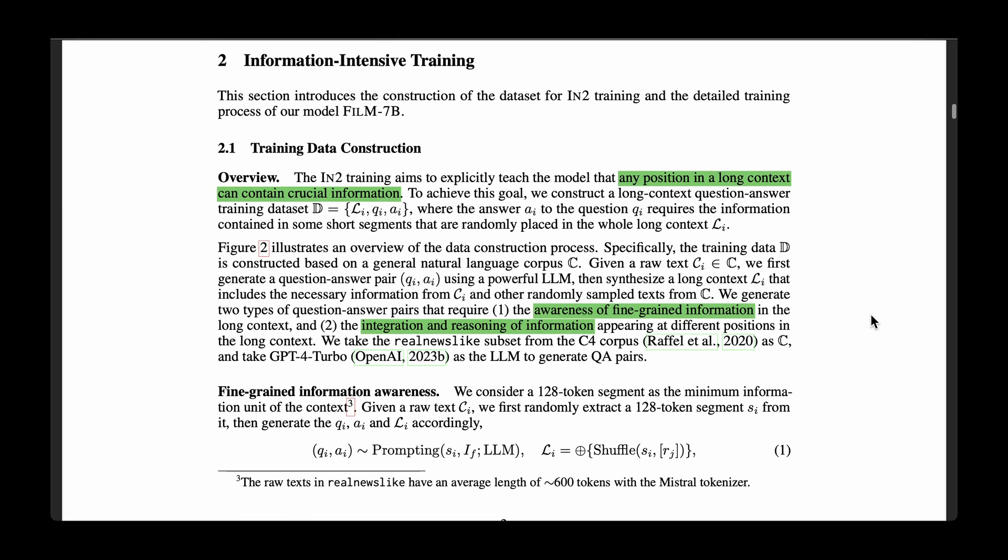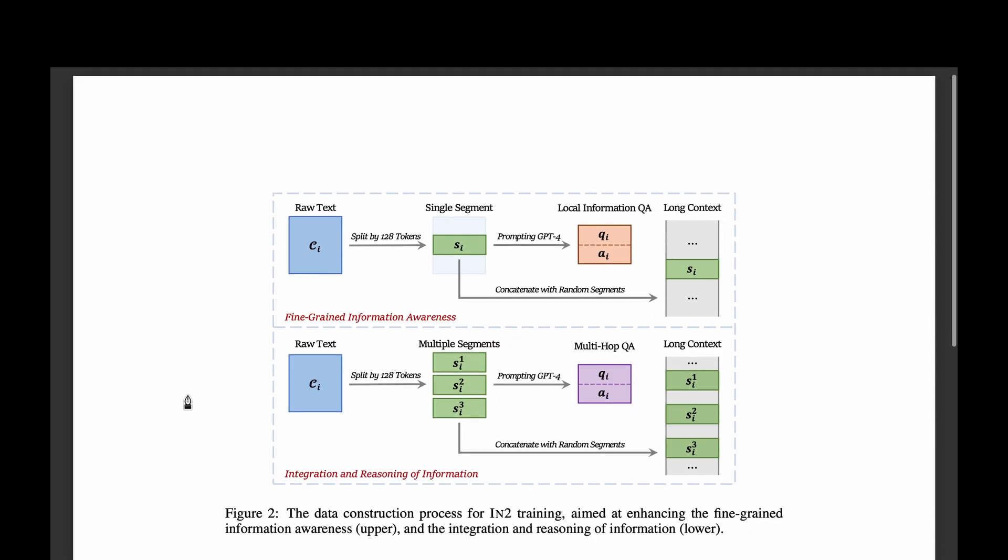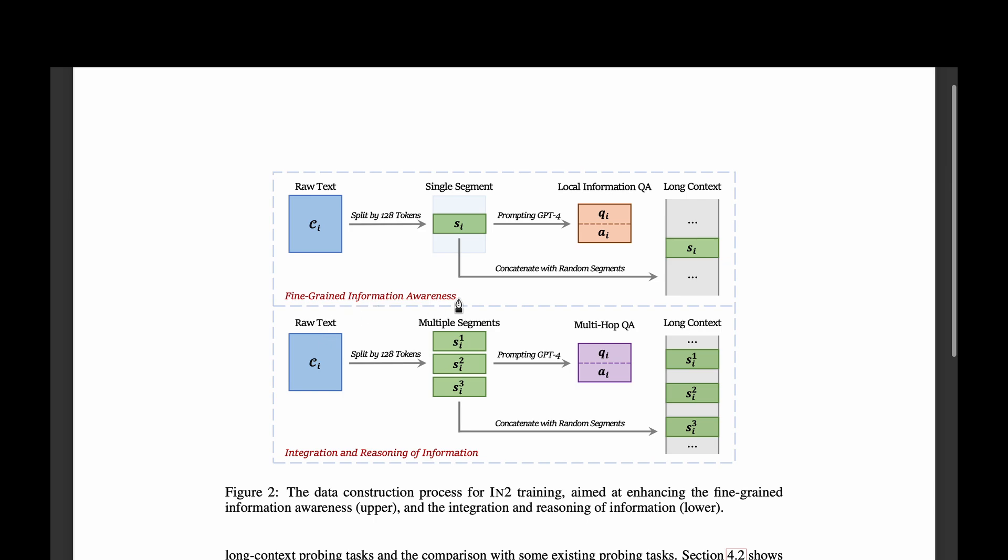How did they go about constructing this dataset? They've introduced two approaches. One is the awareness of fine grained information, and the other one is the integration and reasoning of information. So let's look at the first one, which is fine grained information awareness. In this case, we first take a raw dataset and split it into 128 tokens. And we call each of this set of 128 tokens as segments.